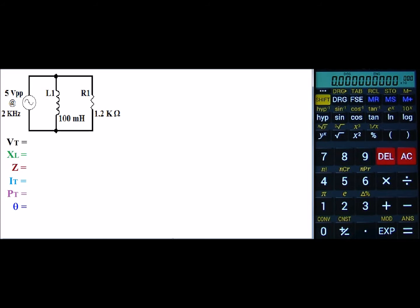First thing we want to look at is our totals. Our voltage total, of course, is 5 volts. Our inductive reactance, X of L, can be found by the formula 2 times pi times F times L. That is 2 times 3.14 times 2k times 100 milli. So we have 2 times pi times 2 exponent 3, which is K, times 100 exponent negative 3, which is milli. And that gives us an inductive reactance of 1.257 kiloohms.